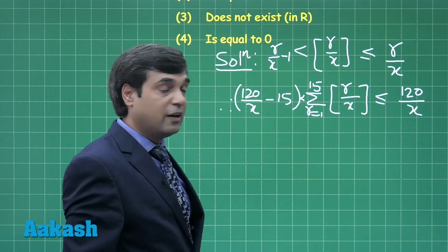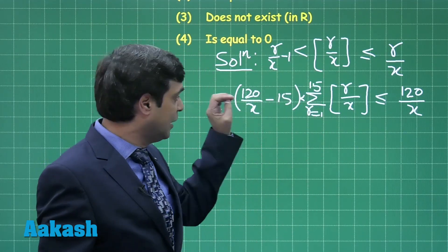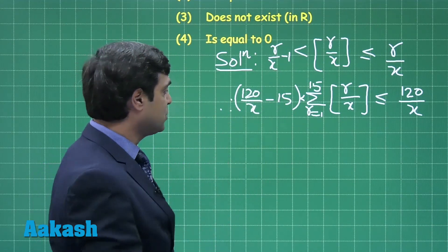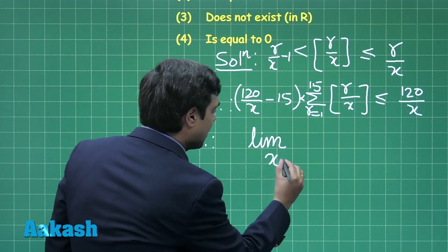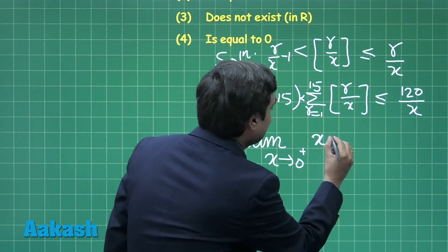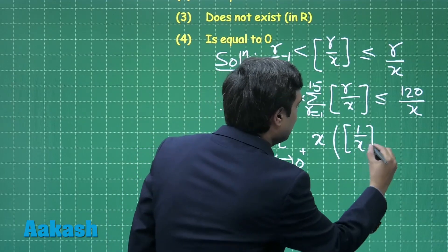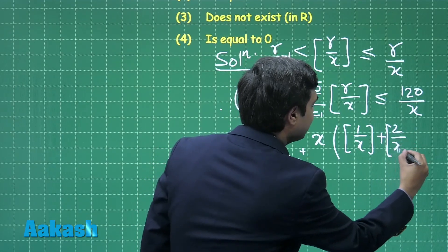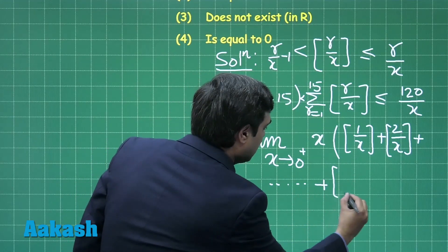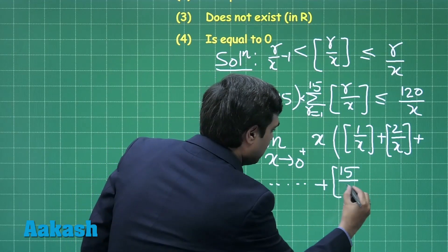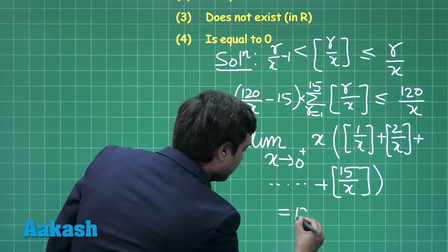So this is clear. Next, if we multiply by x and take the limiting value as x approaches 0 plus, we can clearly see that the limit of x multiplied with the sum of greatest integer of 1/x through greatest integer of 15/x equals 120.